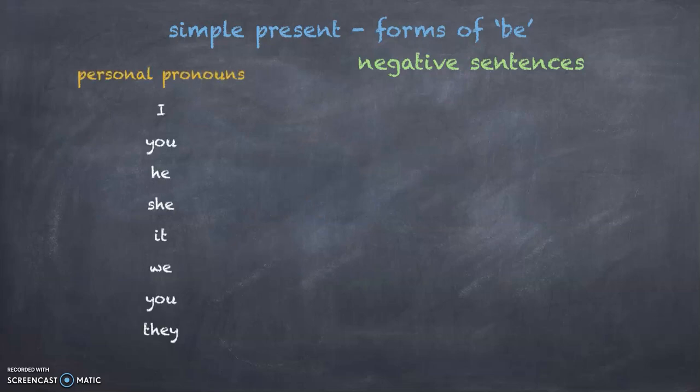When we look at the personal pronouns, you can see the forms of 'be' in a negative sentence. This is very easy because it's the same as in a positive sentence. You only have to add NOT after the correct form of 'be'.